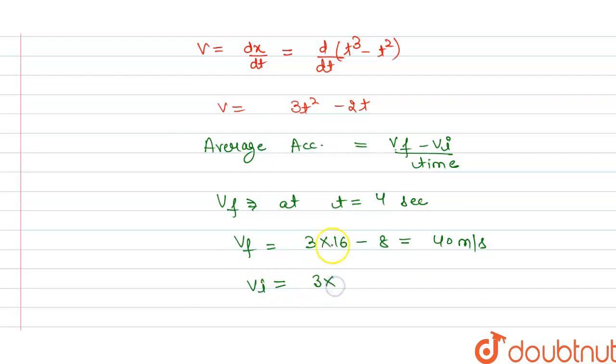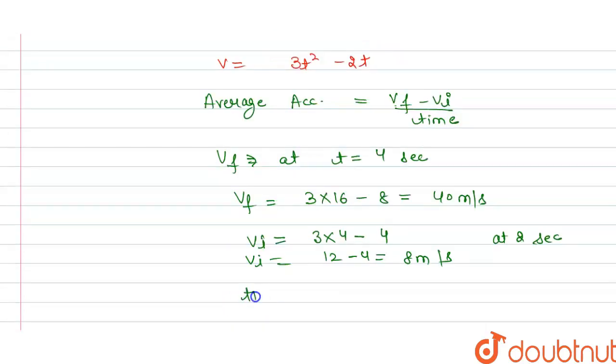3 multiplied by 2, and it is at 2 seconds. So we have 3 times 2 square is 4, minus 2 times 4 here. So this is 12 minus 4, that is 8 meters per second. This is our initial velocity. And time is 4 minus 2, so this equals 2 seconds.